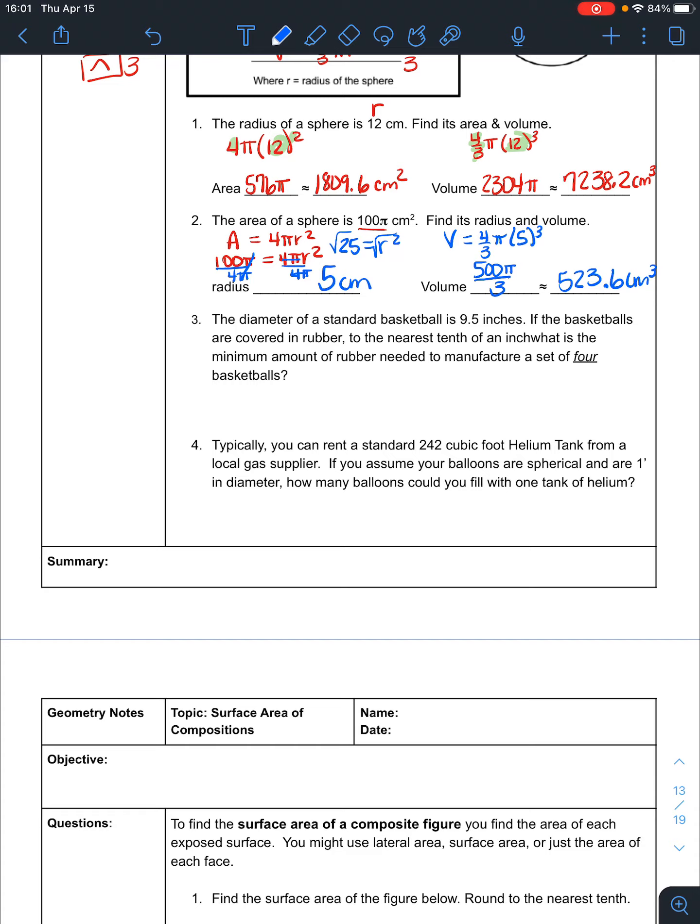The diameter of a standard basketball is 9.5 inches. If the basketballs are covered in rubber, what is the minimum amount of rubber needed to manufacture four basketballs to the nearest tenth? We're talking about area because we're covering it. Area is 4 pi r squared. The diameter is 9.5, so the radius is half of that, 4.75. So 4 times pi times 4.75 squared. It says to the nearest tenth, so we multiply everything out: 4 times pi times 4.75 squared equals 283.5. That's for one basketball.